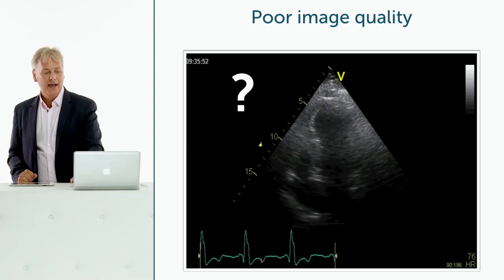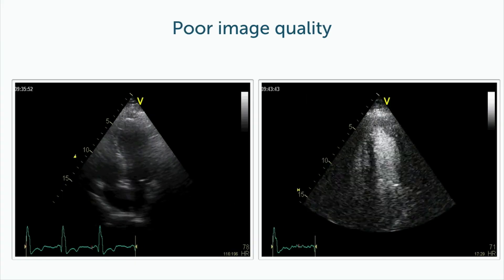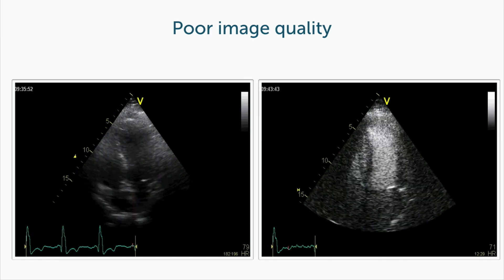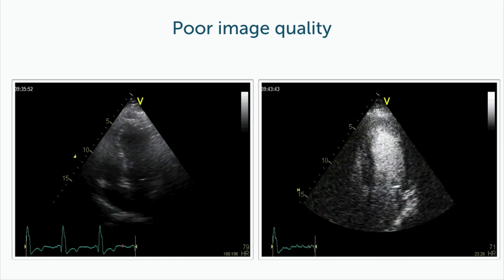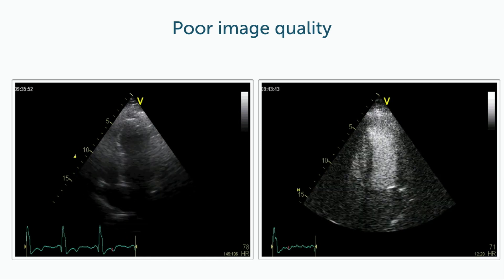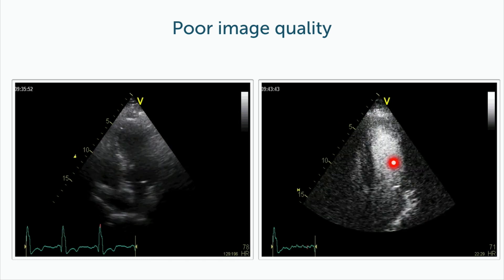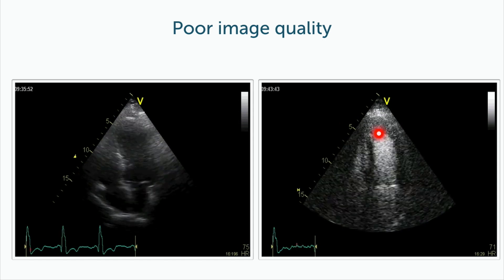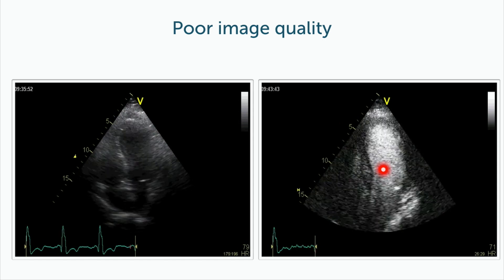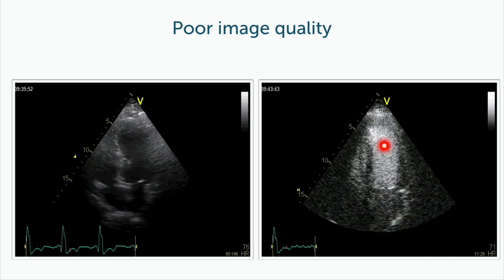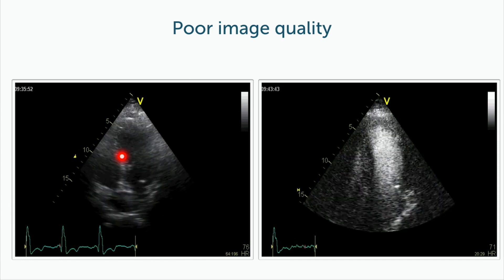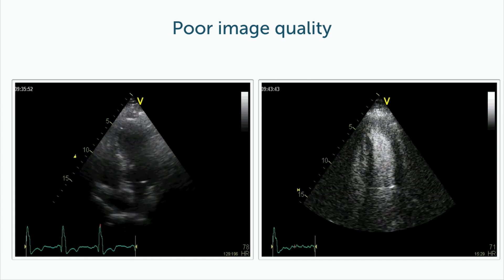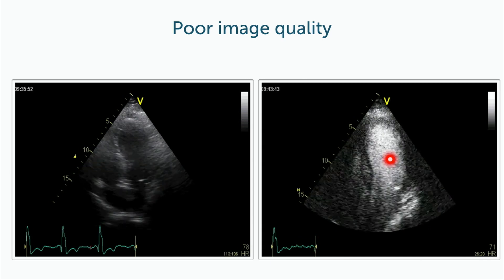Take a look at what happens when we really use contrast here. This is a spectacular difference between the conventional image and the contrast study. Look how nicely you can all of a sudden see the contour, the size of the ventricle, and also assess the function. So while you might believe the patient has poor left ventricle function on the conventional image, everything is quite clear in the contrast study.